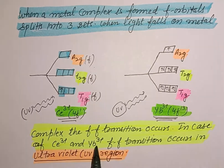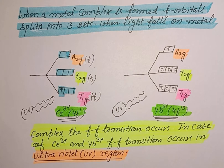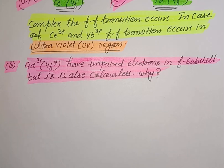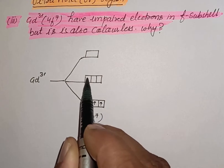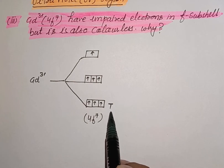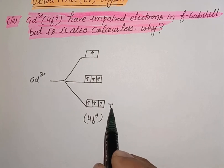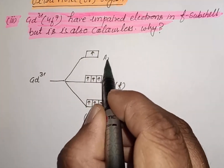Because these f-f transitions take place in the ultraviolet region, Ce³⁺ and Yb³⁺ do not give us color, although f-f transitions do take place. The next question is: gadolinium has an f⁷ electronic configuration and also has unpaired electrons in its 4f orbitals, yet it is also colorless. In the case of gadolinium there are seven electrons — one in each of the t₁g, t₂g, and a₂g f orbital sets.